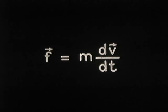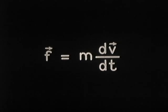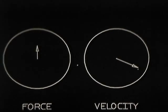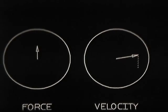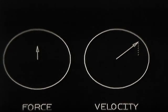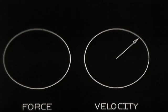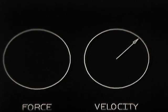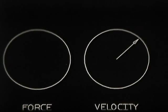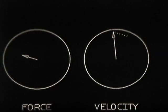Newton's law says that the velocity changes in proportion to the force. The force and velocity are represented as they might be on the instrument panel of a spacecraft. If the force is zero, the velocity remains constant. If the force is non-zero, the velocity changes steadily in the direction of the force.